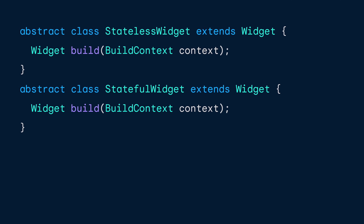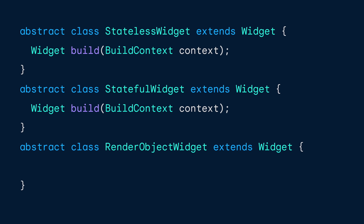Recall in episode two how I mentioned the three primary categories of widget: stateless widget, stateful widget, and render object widget. We saw that stateless and stateful widgets each involve a build method which assembles further widgets, and I briefly mentioned that render object widgets do not have a build method.